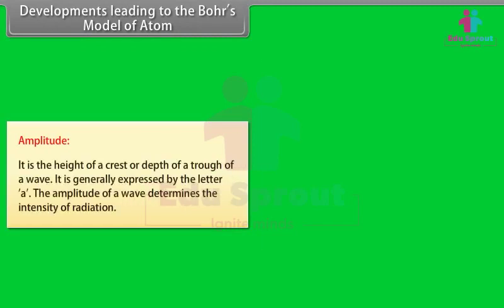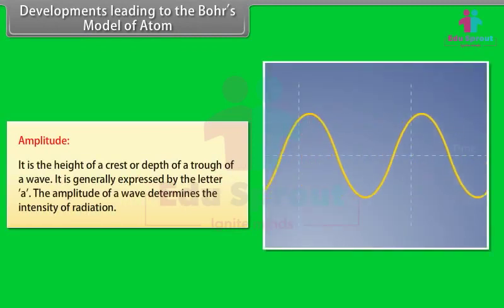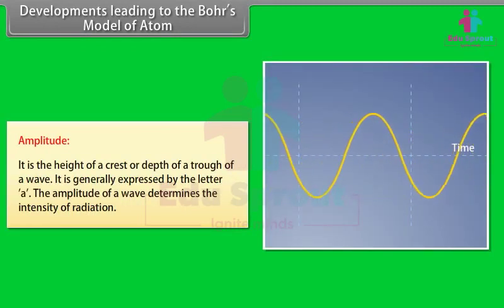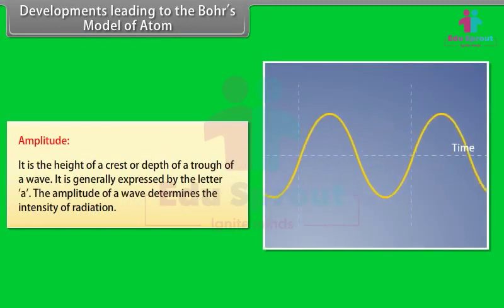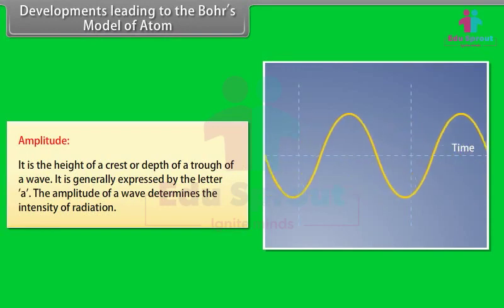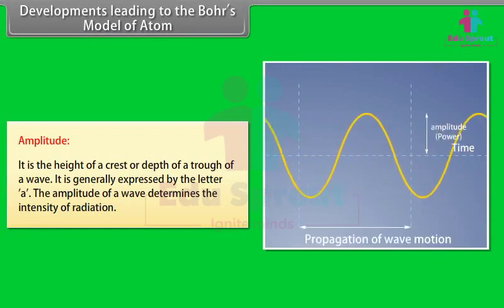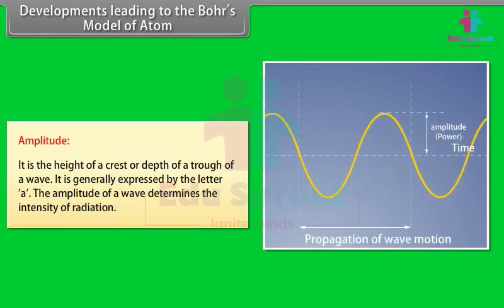Amplitude is the height of a crest or depth of a trough of a wave, generally expressed by the letter A. The amplitude of a wave determines the intensity of radiation.